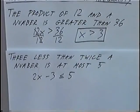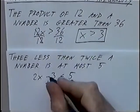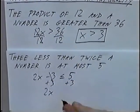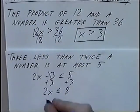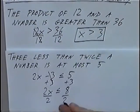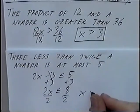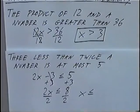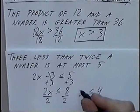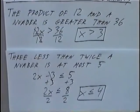Solving for x: add 3 on both sides to get 2x is less than or equal to 8. Dividing by 2 — the inequality stays the same whenever you divide by a positive number. So the answer is x is less than or equal to 4.